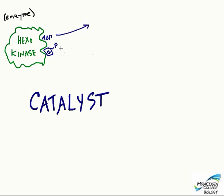The enzyme hexokinase releases the ADP and glucose phosphate, at which point it's free to bind to another ATP and glucose.